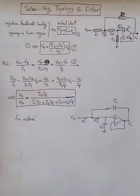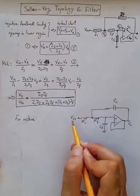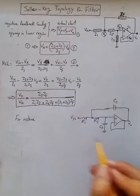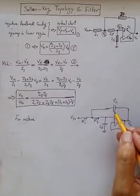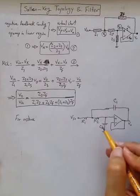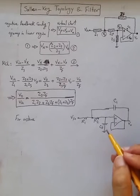So interestingly, just intuitively looking at this, when you have DC here, or very low frequency voltage here, this capacitor over here and this capacitor over here would not be short.